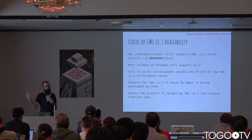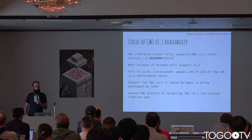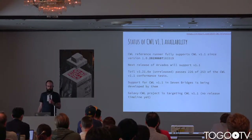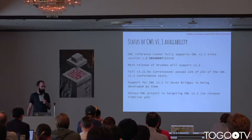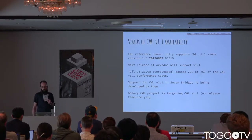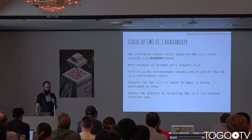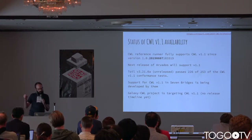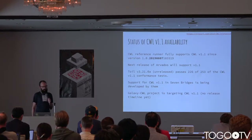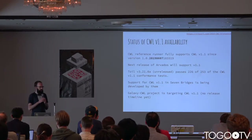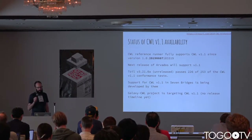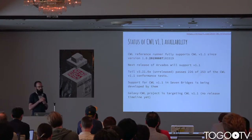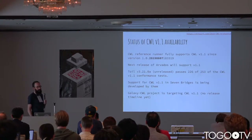Where can you use CWL 1.1? The reference runner is up to date. The next version of the Arvados platform includes it in the development release. The Toil CWL runner, which is popular on grid computing sites, is getting there — almost all the way done — but it's not yet past all the conformance tests. Seven Bridges has announced they're working on support for their proprietary platform, and the Galaxy CWL project is targeting 1.1, though they don't have a timeline for release.